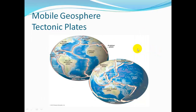The Earth is also broken up into large tectonic plates that are slowly shifting. On these plates, a large portion is continental landmass and a large portion is oceanic crust.